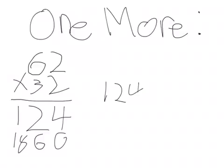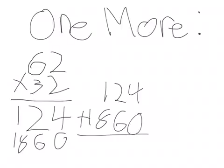124 plus 1860, and that will give us 1,984. And that's another way to do it.